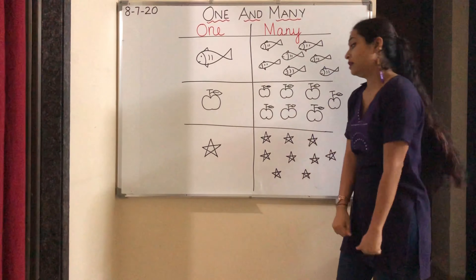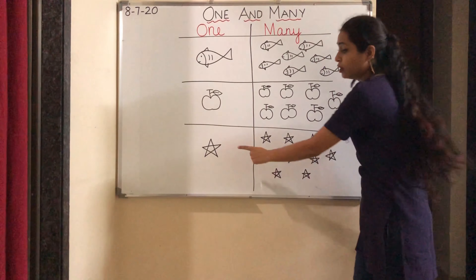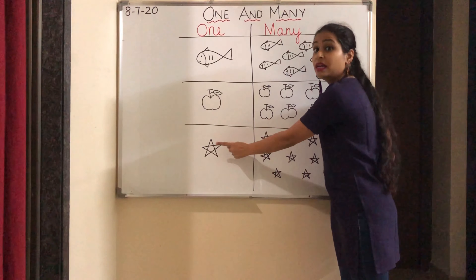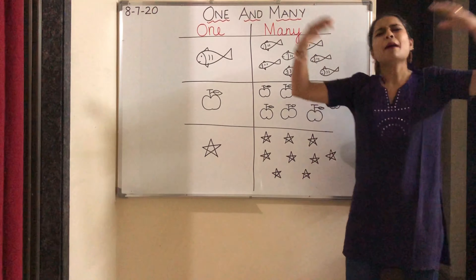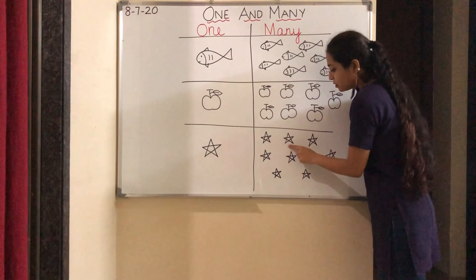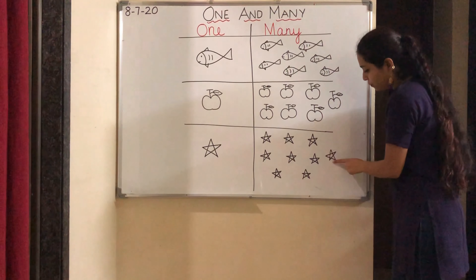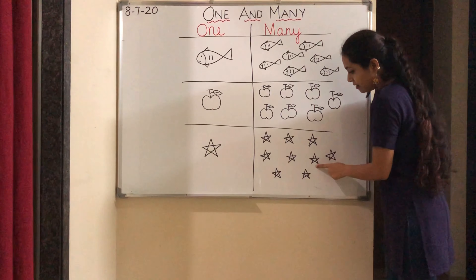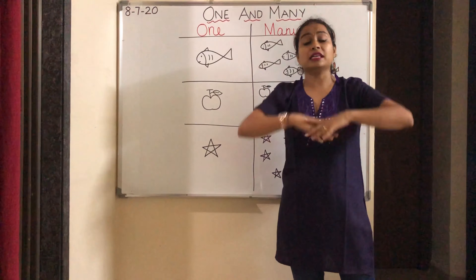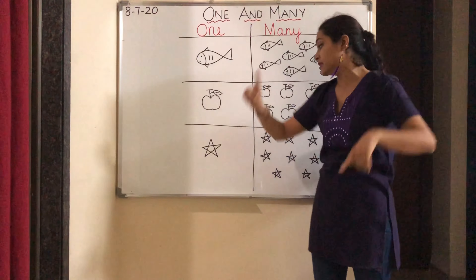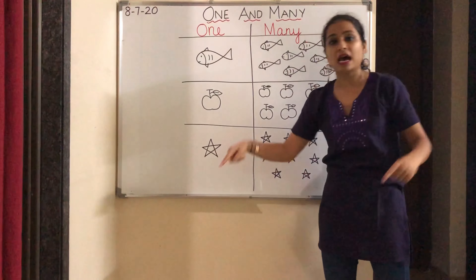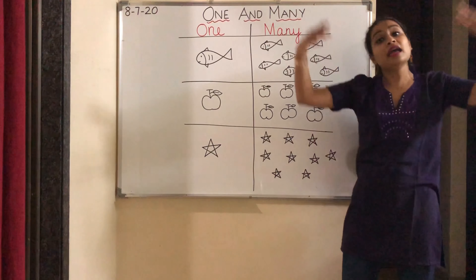Now let's see the third picture. What do you see here? Star! One star. How many? One star. And over here there are many stars. Let's count. One, two, three, four, five, six, seven, eight, nine. There are nine stars — many stars. One star and many stars.